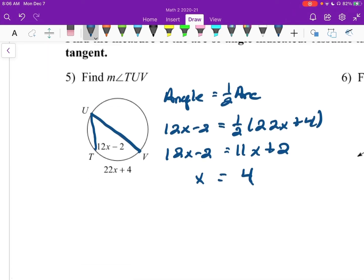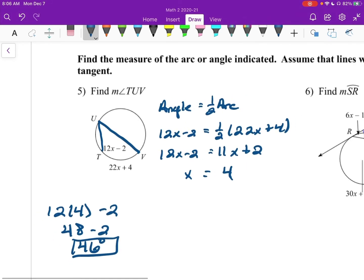And now I'm supposed to find the measure of angle TUV, so I need to plug into that 12X minus 2. So 12 times 4 minus 2. So 48 minus 2, 46 degrees. All right, there we are.